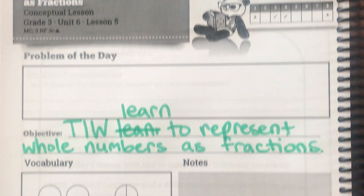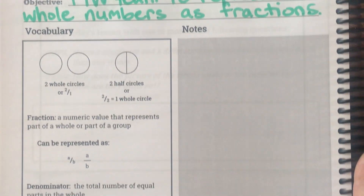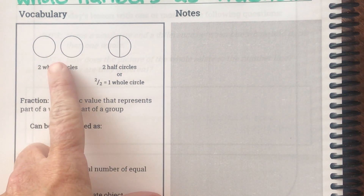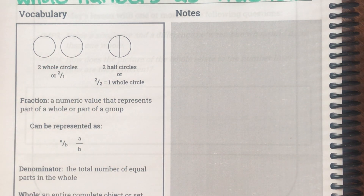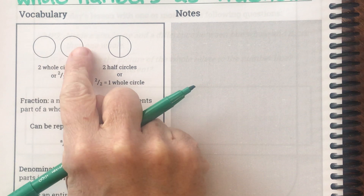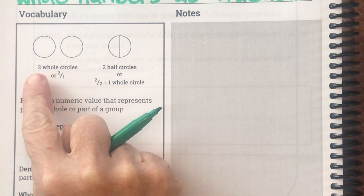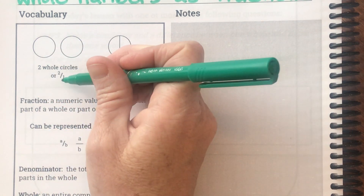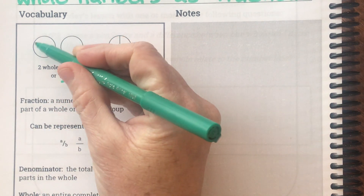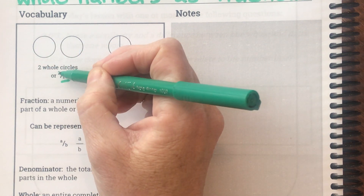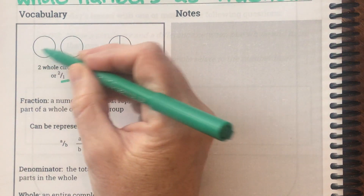So let's look at our vocabulary today. We did this in our last two lessons. We saw how to write, when we see two wholes, that means two whole circles or two over one. The denominator is one because the wholes have been partitioned into only one part, and the numerator is two because I have two of them.